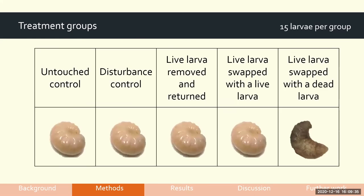We did 15 replicates per treatment group. There was an untouched control where we just watched a larva in its nest cell for an hour, a disturbance control where we opened and closed the wax, a live larva removed and returned to test the effect of physical handling, a live larva swapped with another live larva from a different area of the same colony to test translocation effects, and finally a live larva swapped with a dead larva. That dead larva was taken alive from the same colony, frozen for 24 hours, then warmed back up to the same temperature as the brood patch — so hopefully eliminating temperature as a confound, with death recognition being the key variable.